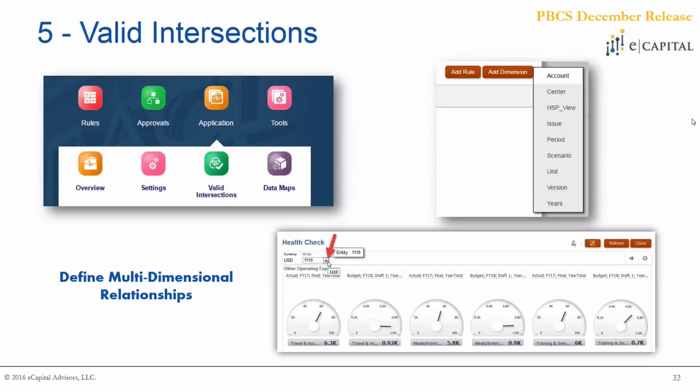On top of that, this year within dashboards they've incorporated those valid intersections. Going forward, if you have a valid intersection set up, those will be the only options users are even able to select within those reports. For example, in the health check dashboard, if for the currency USD there's no entity considered valid, it simply won't show up in that drop-down list — simplifying reporting options and making the application much easier for end users.